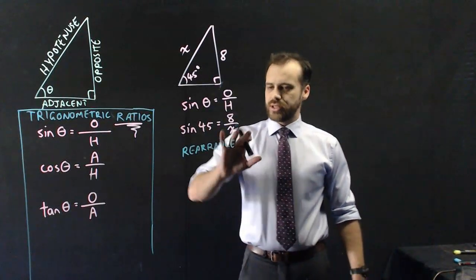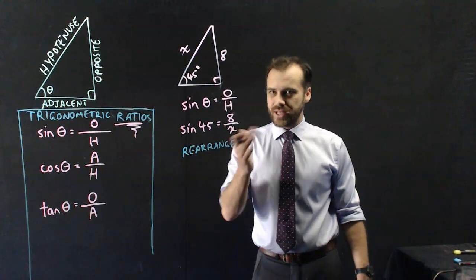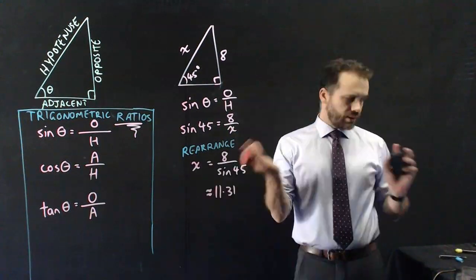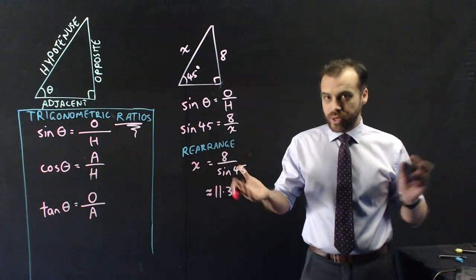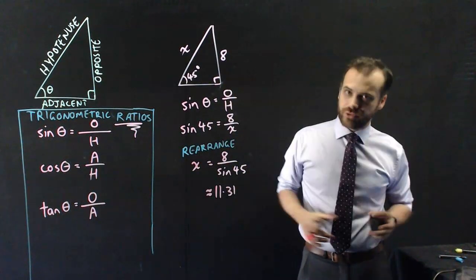In this case, I need to multiply both sides by X, divide both sides by sine 45, and that's going to let me find my X value. So that's approximately 11.31 and it works. So why am I saying this stuff's useless?